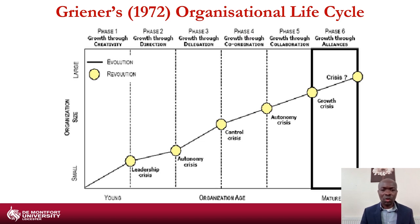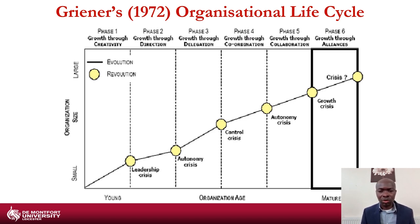Organisations progress through phases — from phase one, where you're looking at growth through creativity, through to a later phase where you're looking at growth through alliance. If not properly managed, this can have a requisite impact on the organisation. These are ways to look at the organisational life cycle based on the work of Greiner in 1972.